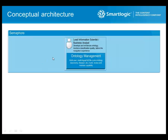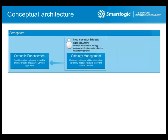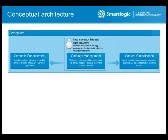Second, semantic enhancement — applying ontologies to help users explore and find information by exposing ontologies in browsable ways and offering search-as-you-type over the ontology to disambiguate search queries. Third, content classification applies those ontologies to any type of content — unstructured or semi-structured — to generate metadata representing the knowledge locked in those documents. Structured content can also be classified to enrich it according to the ontologies held in Semaphore.